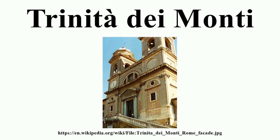In front of the church stands the Obelisco Sallustiano, one of the many obelisks in Rome, moved here in 1789. It is a Roman obelisk in imitation of Egyptian ones, originally constructed in the early years of the Roman Empire for the Gardens of Sallust near the Porta Salaria. The hieroglyphic inscription was copied from that on the obelisk in the Piazza del Popolo, known as the Flaminio Obelisk. During the Napoleonic occupation of Rome, the church, like many others, was despoiled of its art and decorations. In 1816, after the Bourbon Restoration, the church was restored at the expense of Louis XVIII.